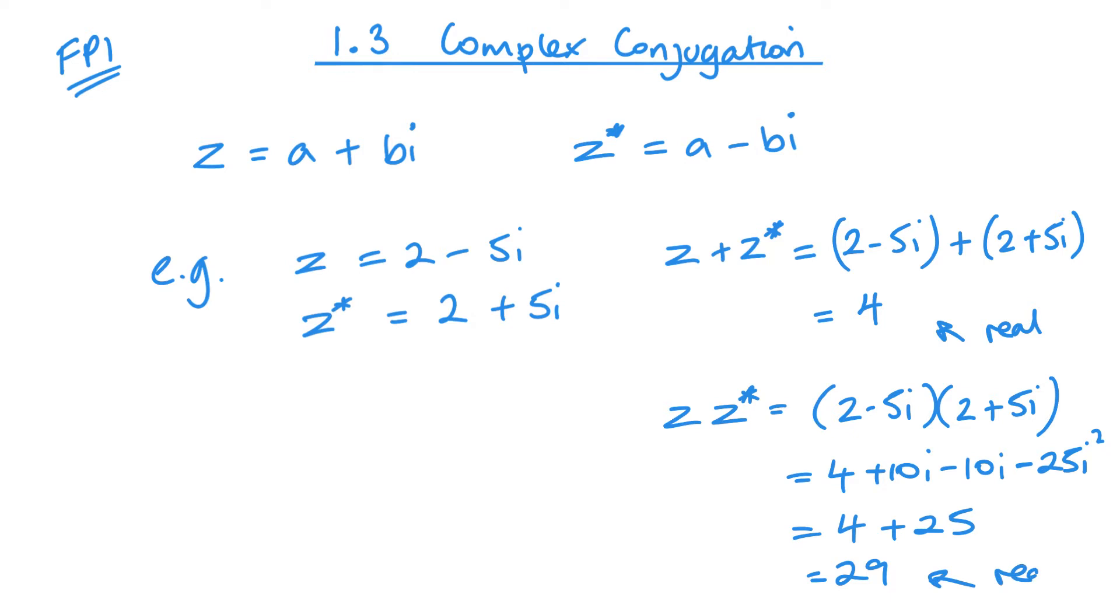And that's 29. Again I get a real number. So if I'm adding them or finding the product of the two, then I'll always get a real value.